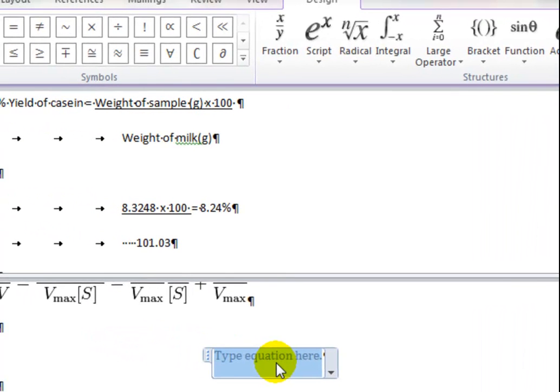So where it says type equation, you just type percentage yield of casein. Now those of us who have used Word before will now be going, well that's better, but in the past when you tried to type text into Equation Editor, it behaved rather strangely. You wouldn't separate stuff into separate words, for example. It works quite nicely now.